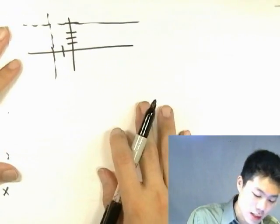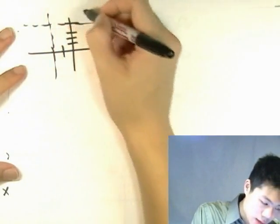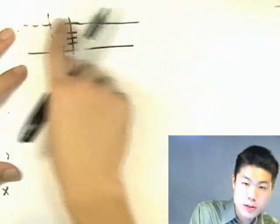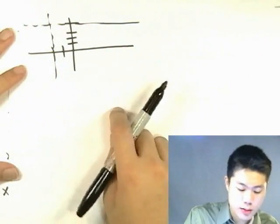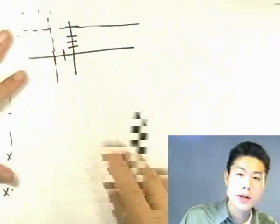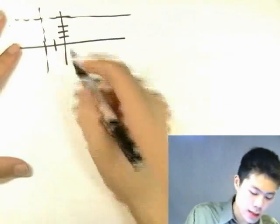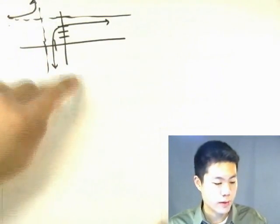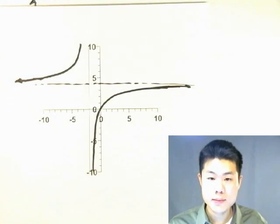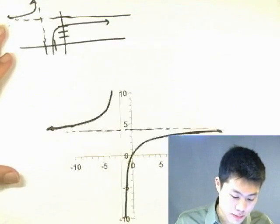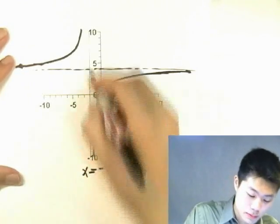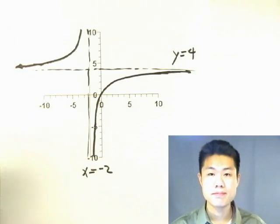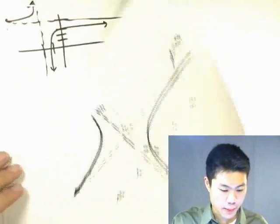So we can see that there are two asymptotes: x equals negative 2 and y equals 4. That's our first example.